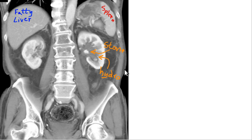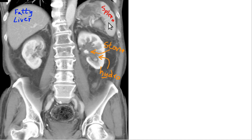Here's the CT equivalent of that ultrasound: a stone at the UPJ (uretero-pelvic junction) with hydronephrosis — dilatation of the calyceal system behind it. The contralateral kidney looks normal. Notice also the fatty liver, which is lower in density than the spleen. I see kidney stones multiple times every day and hydronephrosis due to kidney stones several times a week.